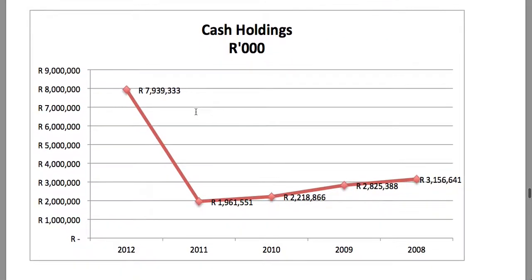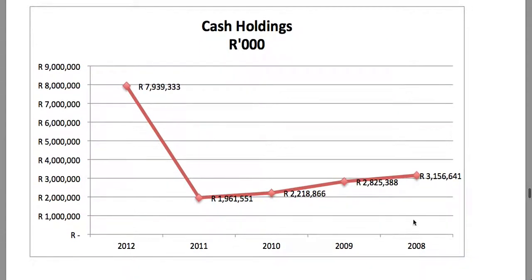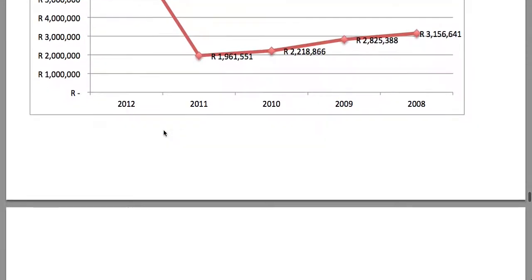Finally, looking at the cash holdings, since 2008 ShopRite had kept back cash in the order of about 1.9 to 3.1 billion Rand, but has since upped the cash position to 7.9 billion Rand, which is very interesting.